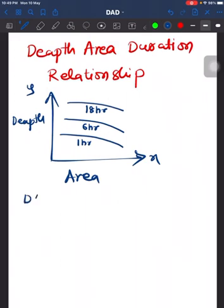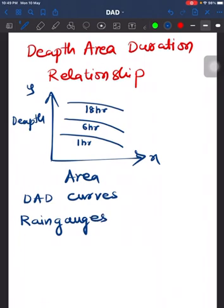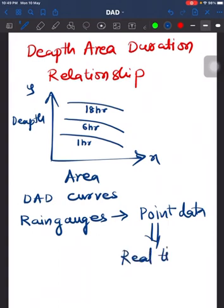How do we plot DAD curves? We know that we have rain gauges for taking the measurement of rainfall, which gives us point data. But we want to convert this point data into real-time data.